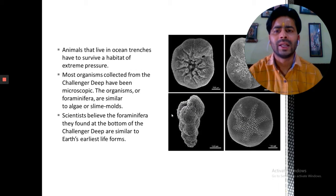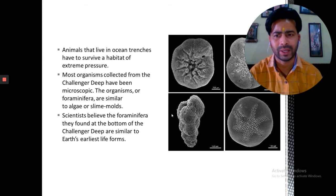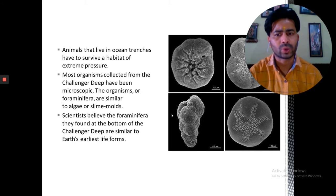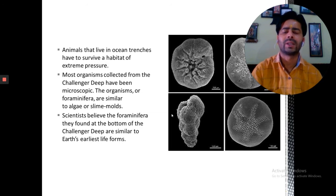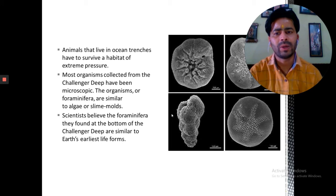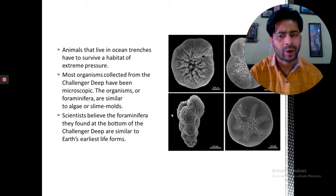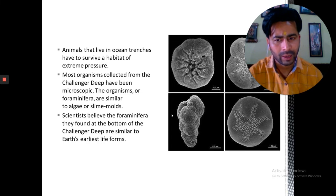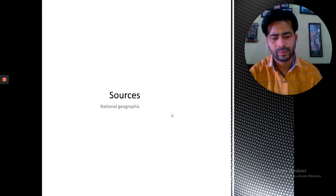Animals that live in ocean trenches have survived a habitat of extreme pressures. Most organisms collected from the Challenger Deep have been microscopic, organisms like Foraminifera similar to algae and molds. Scientists believe that the Foraminifera they found at the bottom of the Challenger Deep are similar to Earth's earlier life forms.